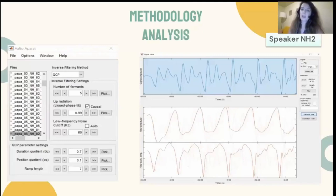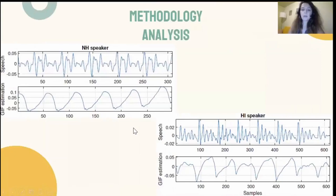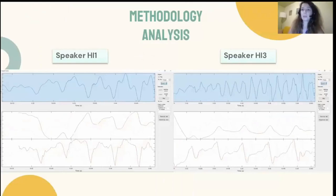This is a screenshot from AaltoAparat. The figure shows six cycles of a normal hearing speaker — a straightforward case — with the recorded speech signal in the upper panel and the estimated glottal source signal in the lower panel. On the left is an example of a speaker with normal hearing and on the right a speaker with hearing impairment, both good examples. The next slide shows problematic cases of two hearing impaired speakers where cycles are uneven or incomplete, so the analysis had to be based further into the signal.